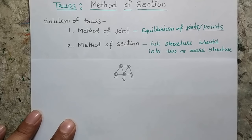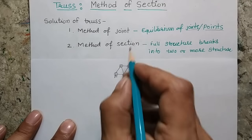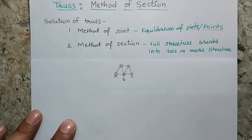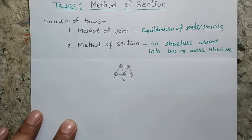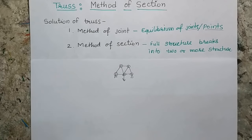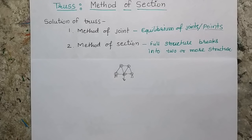When we talk about the method of section, we basically split or break our truss and different sections of the truss are considered in equilibrium. Then the system is solved considering the system of combined rigid bodies.